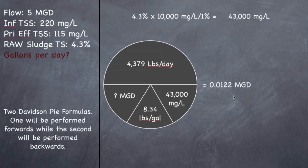So MGD times a million, because they want it in gallons per day, so million gallons per day times a million will give me gallons per day of 12,200. So in one day, I produce at this wastewater treatment plant 12,200 gallons per day of sludge.